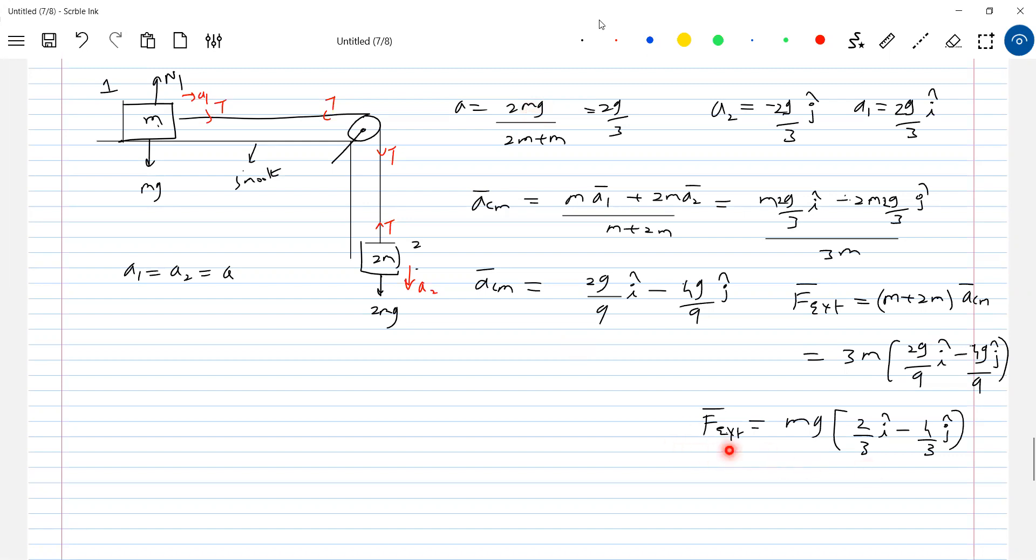What this center of mass is telling? What is the net external force acting on system? Mg 2 by 3 i cap minus 4 by 3 j cap. But what we took here, you look at this. We just say like a 2mg force acting, that way they're accelerating. Why the blocks are accelerating? Blocks are accelerating because of this external force acting on system. I think there's a lot of difference of which one is right, which one is wrong. There we were bothered about only the motion of the blocks in laws of motion. Here we are bothered about the motion of the system.